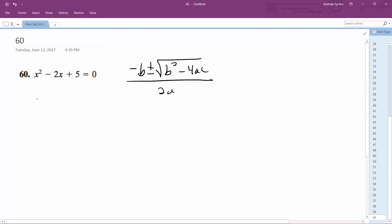So we have a equals 1, b equals negative 2, c equals 5. So we get 2 plus or minus square root of b squared, which is 4, minus 4 times 1 times 5